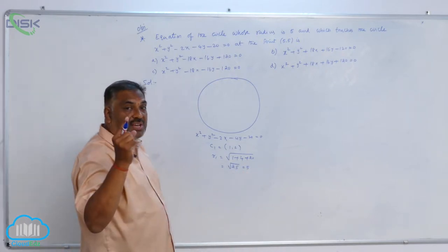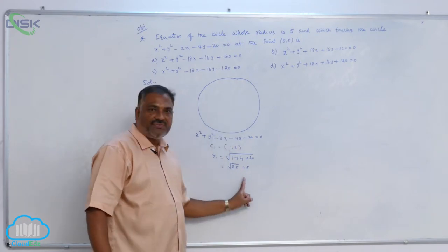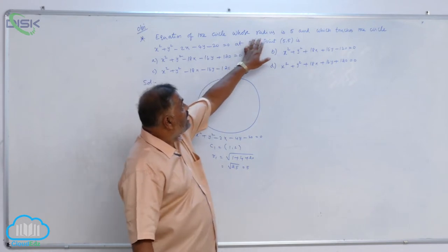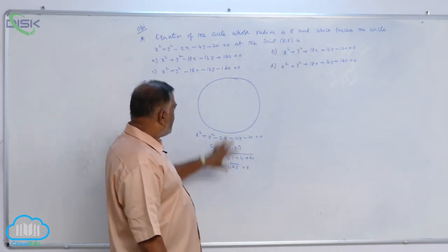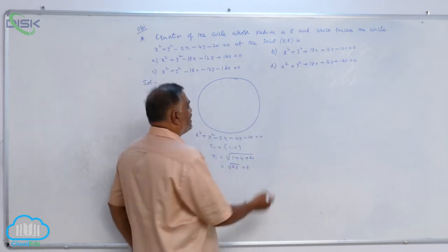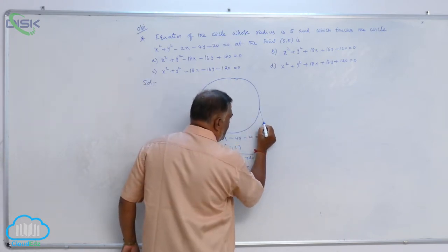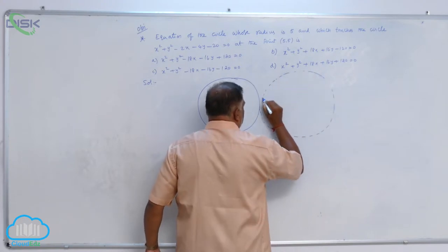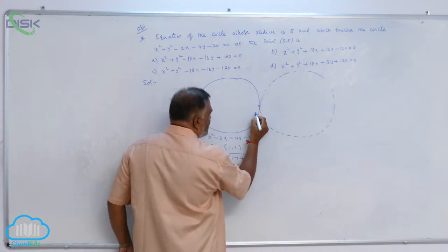Now you can observe very clearly the given circle is of radius 5, and we require another circle whose radius is also 5. That means the circles touch each other. The expected circle will be of the same radius and it will be like this. And they are touching at what point?